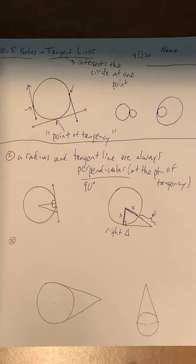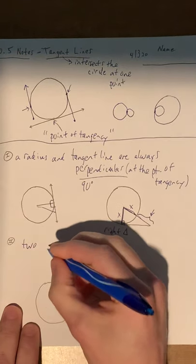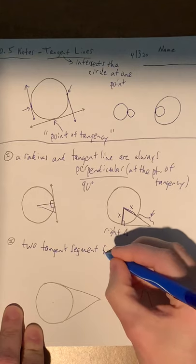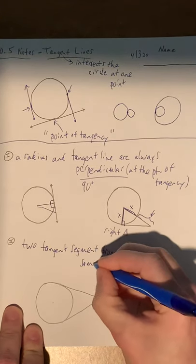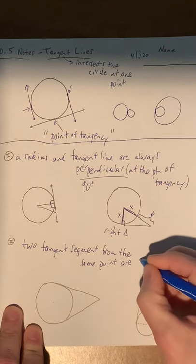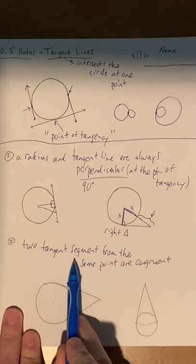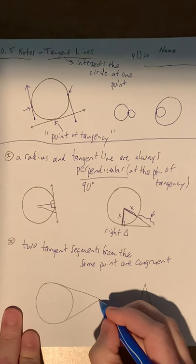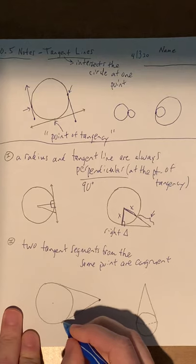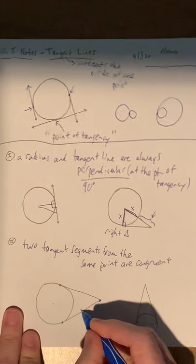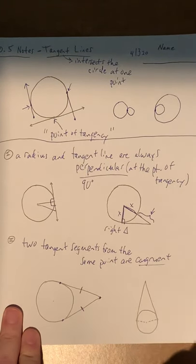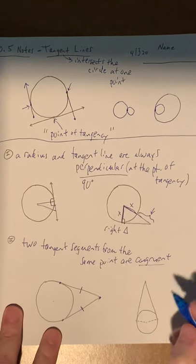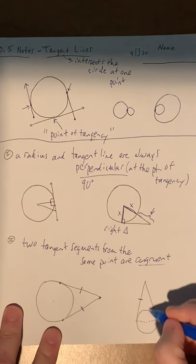All right, second property that we're going to use in this section a little bit is that two tangent segments from the same point are congruent. So for instance, right here, coming from this same exterior point, this segment is tangent, this segment hits where it's tangent, and those two segments are going to be congruent to each other. As long as they come out of the same point to where they hit being tangent, those are congruent. Something like this, this segment here would be congruent to that.